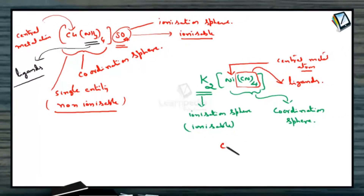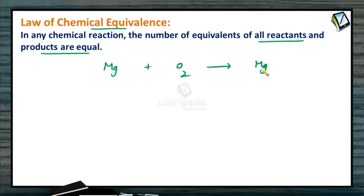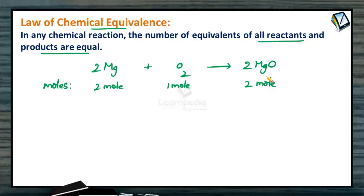There being 4 cyanides directly attached to the central metal atom, 4 is the coordination number. In any chemical reaction, the number of equivalents of all reactants and products are equal. Any two substances always react in the ratio of their equivalent weights. When we take the example of magnesium reacting with oxygen to give magnesium oxide, in terms of moles, 2 moles of magnesium combines with 1 mole of oxygen to give 2 moles of magnesium oxide.